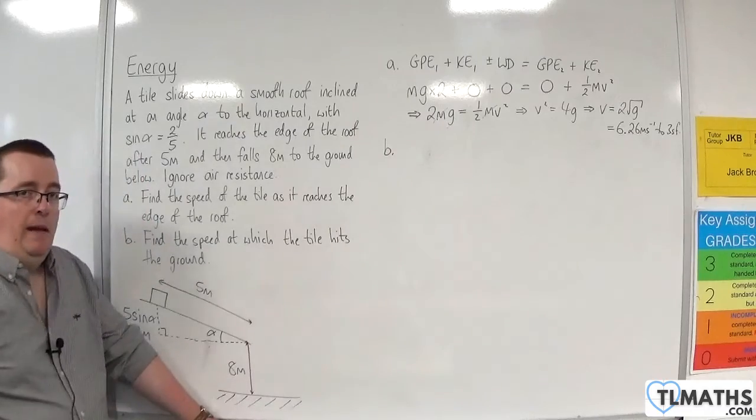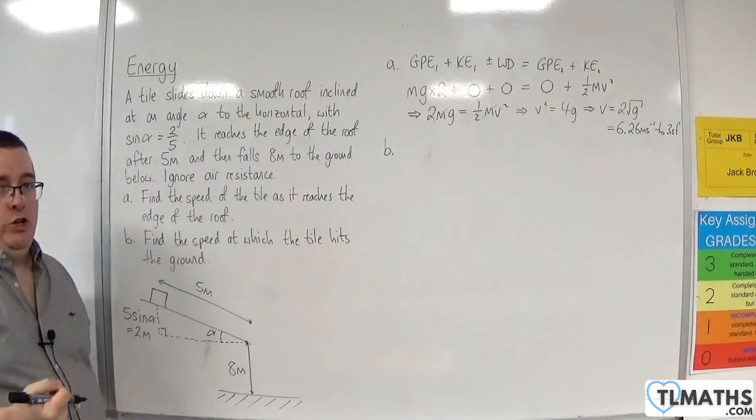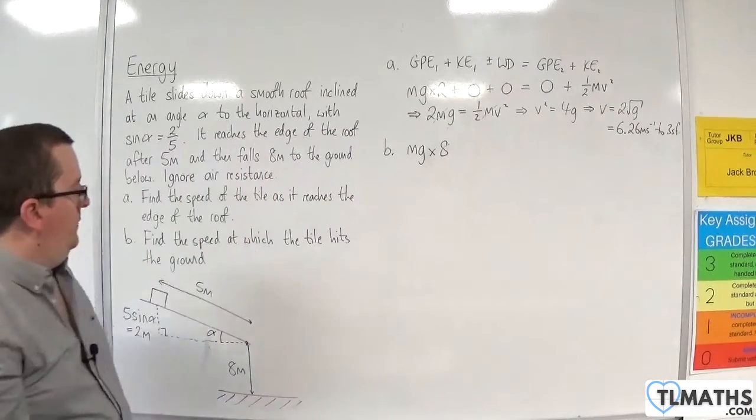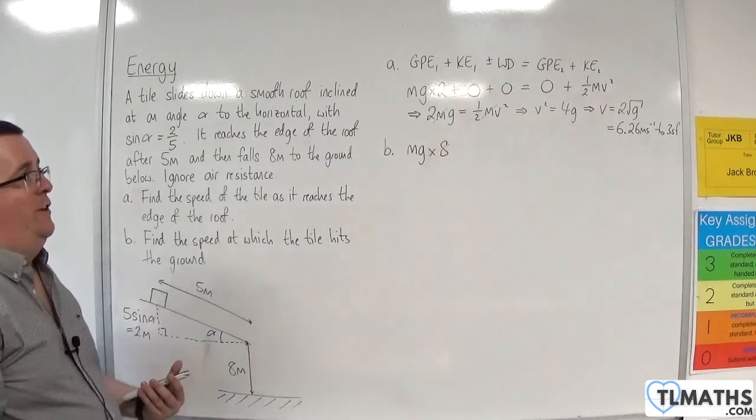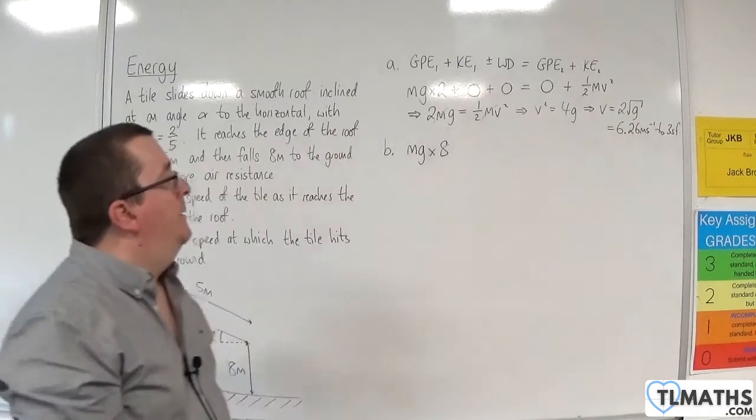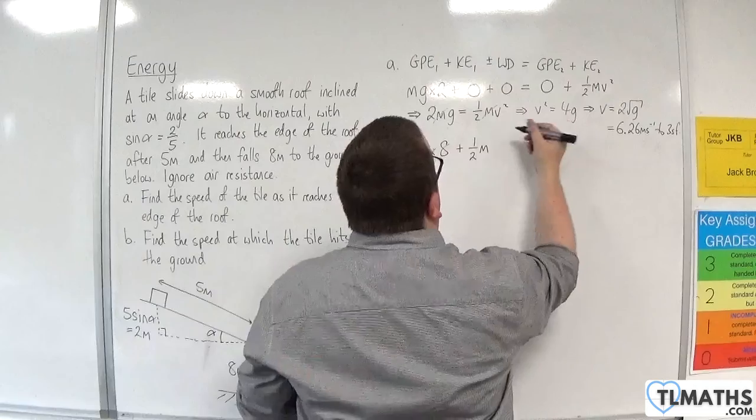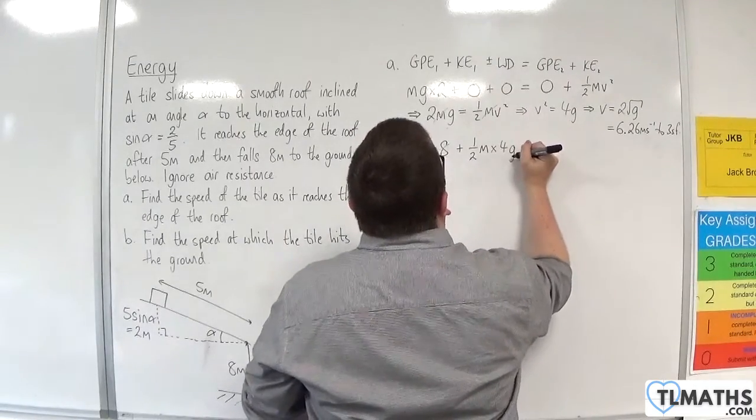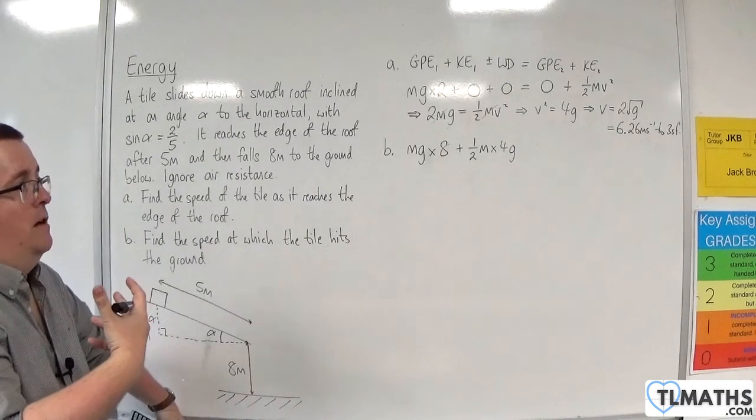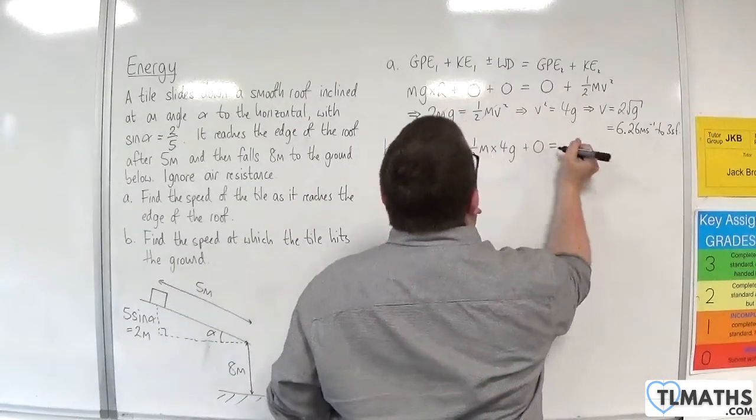So actually we're starting 8 metres above the ground. So using the work energy principle, the initial gravitational potential energy will be mg times 8. Plus the initial kinetic energy. Well, I know what the speed of the object is at this point. It is 2 root g. So we'll have plus one-half m times v squared, which is 4g. Again, we're ignoring air resistance. So there are no other forces acting in the direction of motion. So we can ignore any of that. So that's going to be zero for the work done.